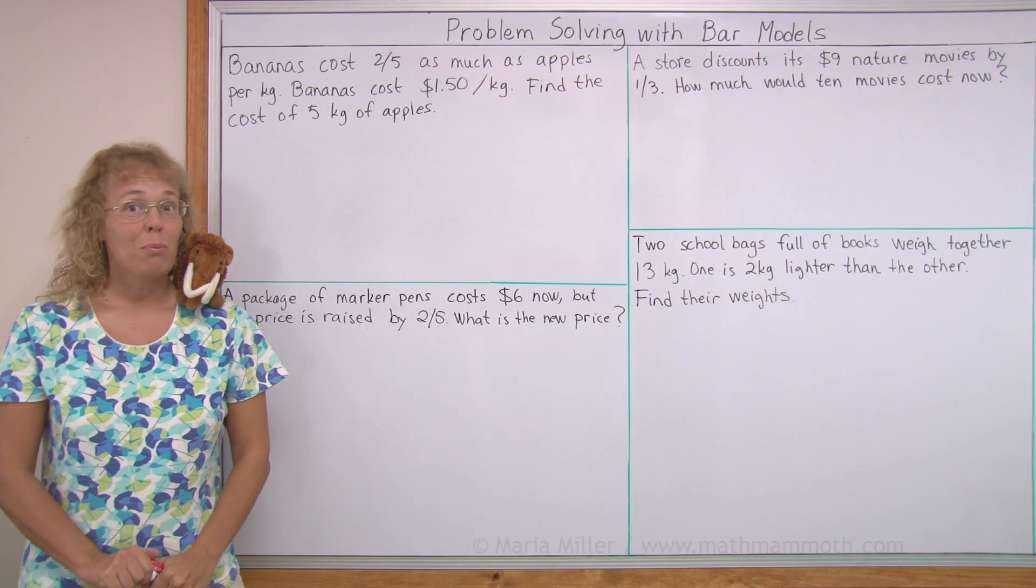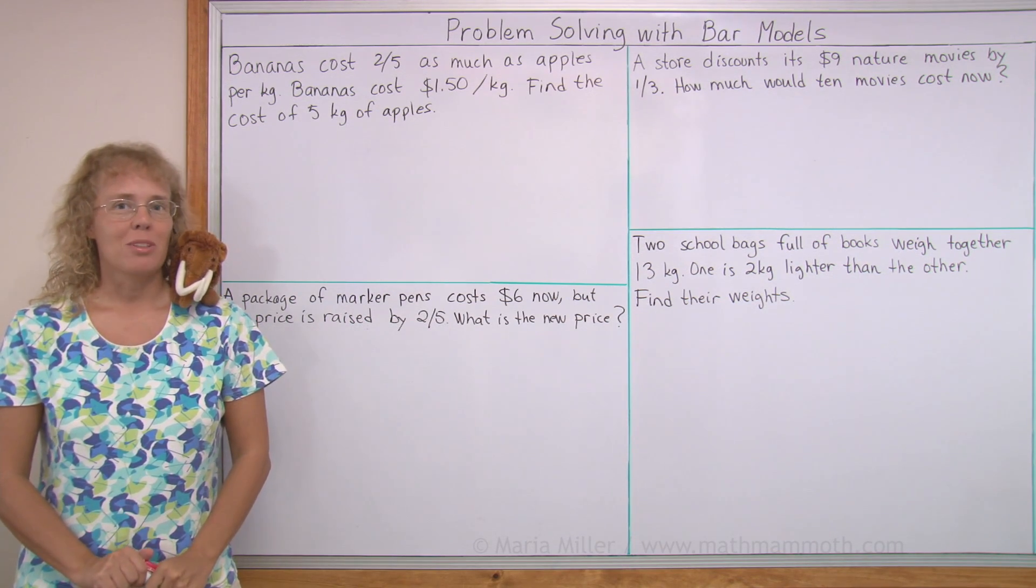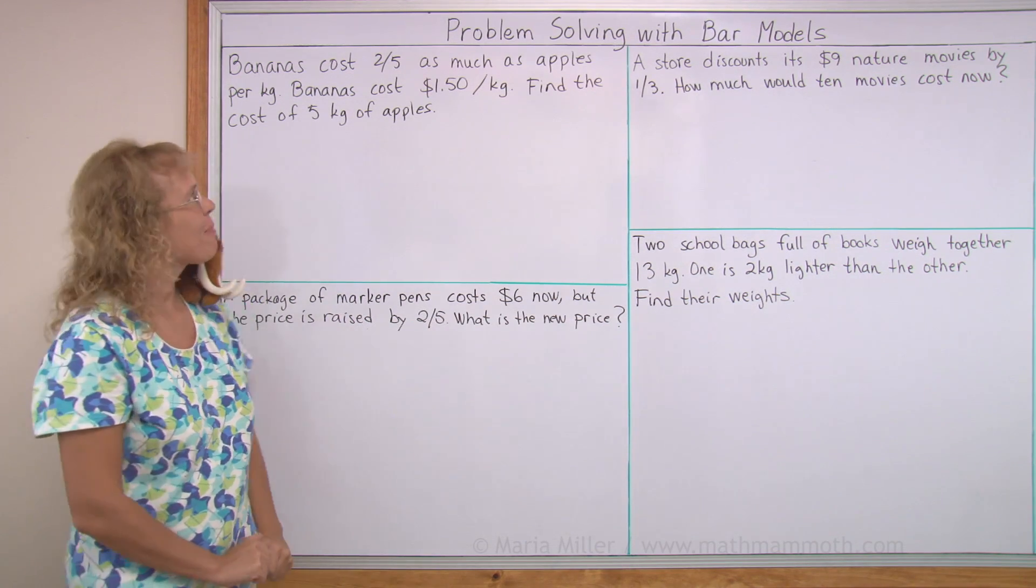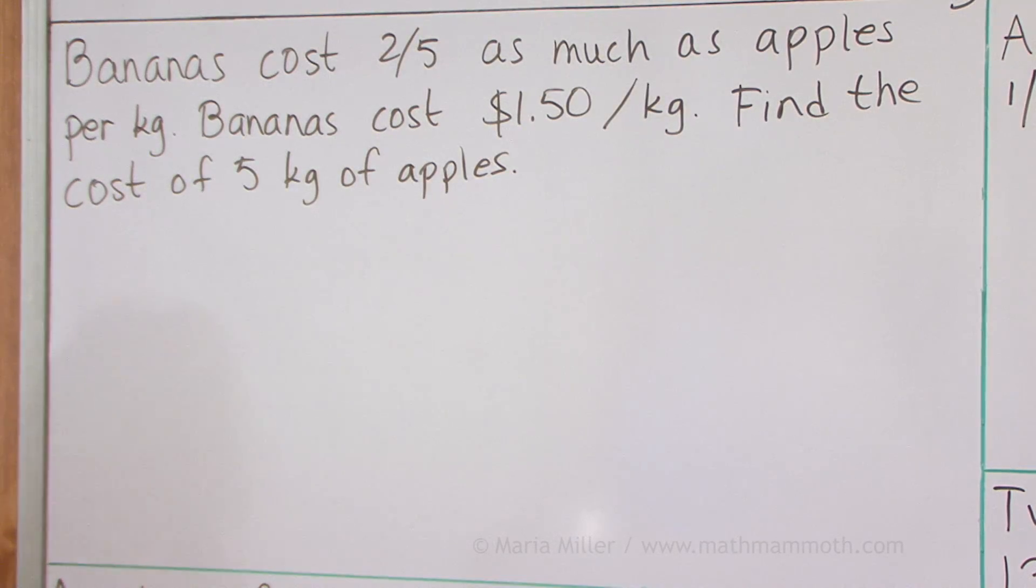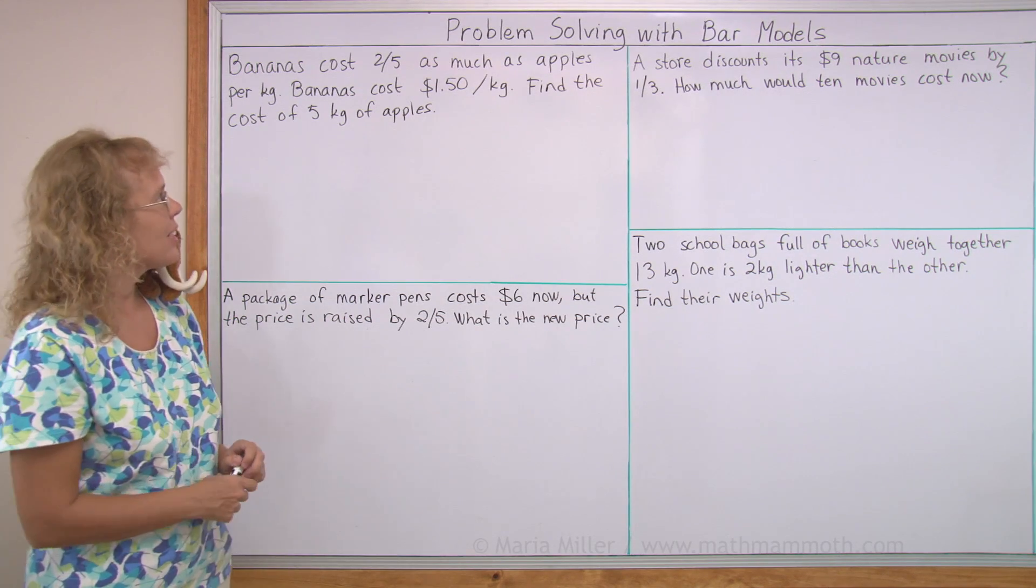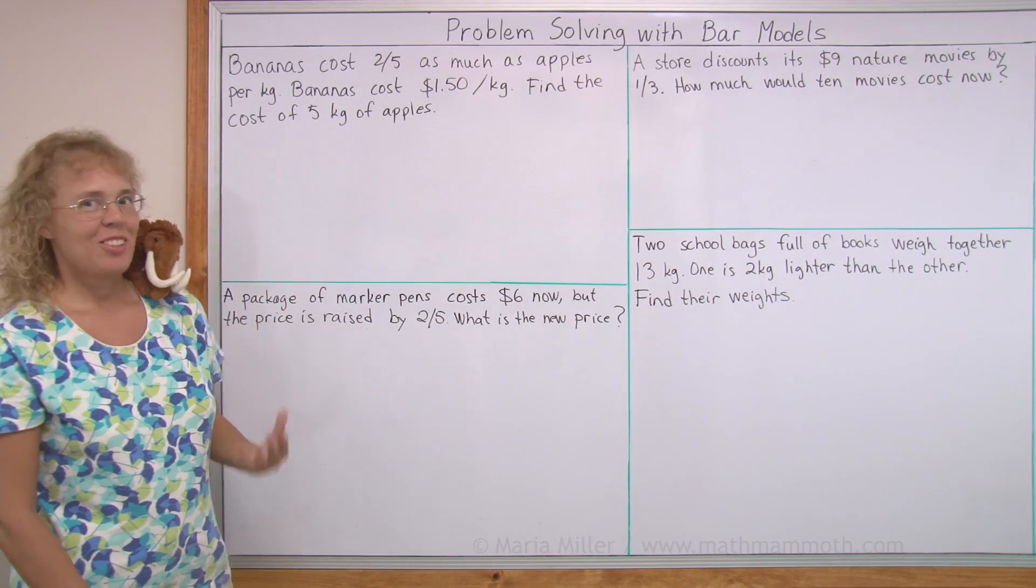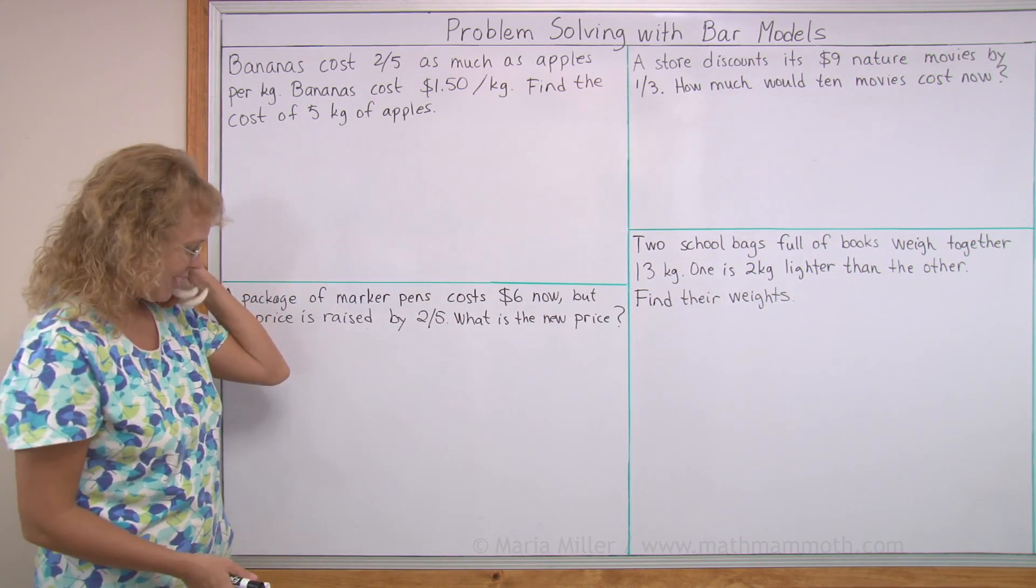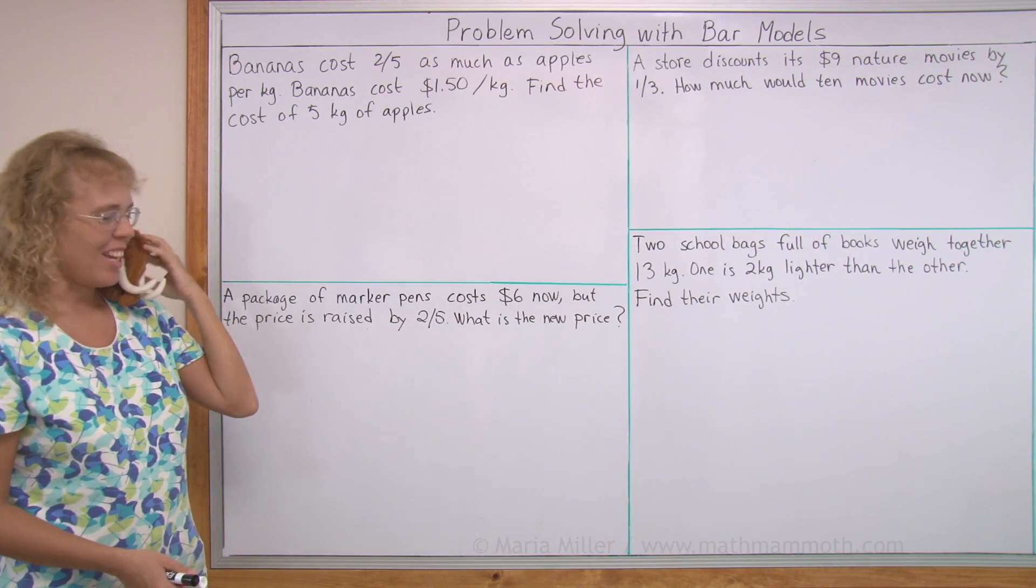In this lesson, we're going to do some problem-solving using bar models to help us. First problem has to do with bananas and apples. What's that, Mathi? Why not blueberries? Well, I don't know. I just chose bananas and apples. Oh, that's OK. OK, good.